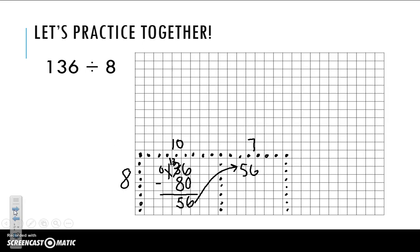We're now going to multiply 8 times 7 which gives me 56. We're going to subtract.